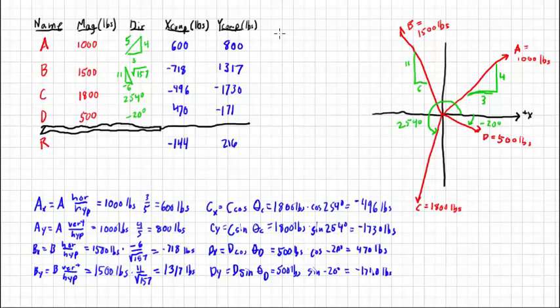Now we employ our other formulas to find out the magnitude of R and its direction. So we use our Pythagorean Theorem, and we take the square of negative 144 pounds, add it to the square of 216 pounds, and we end up with 260 pounds. So just enter that right here.